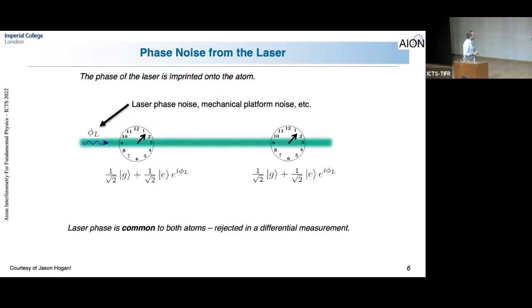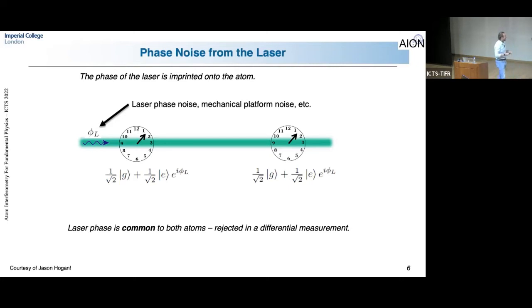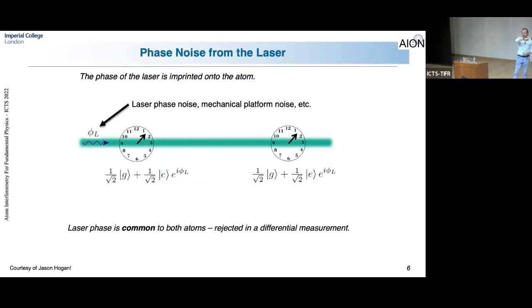For those familiar with laser interferometry, measuring gravitational waves requires a two-arm structure to cancel laser noise imprinted on mirrors — a fundamental principle for reaching that precision level. For atom interferometry, conceptually you don't need this, because the laser pulse's phase noise and mechanical platform noise are imprinted on both clocks in exactly the same way, so they cancel in the measurement difference. A single arm is fully sufficient.